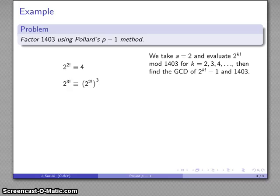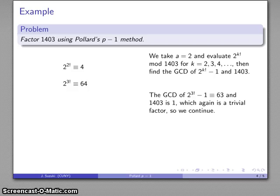Now, one of the things that makes this computationally feasible is that when I evaluate these higher powers, remember the factorials are defined recursively. So 3 factorial is 2 factorial times 3. So I can evaluate 2 to the 3 factorial as (2 to the 2 factorial) raised to the third power. And that's going to be 4 to the third, which equals 64. And again, I'm going to look at the greatest common divisor of that number minus 1 and 1403. Again, that's going to be 1.